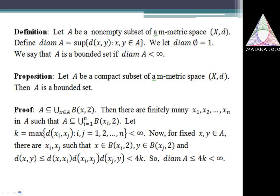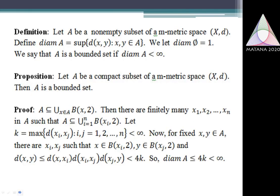I define a new concept in the next slide: the diameter of a subset of an M-Matrix Space. I begin with the M-Matrix Space X and consider a set A. I define the diameter of A, denoted diam(A), as the supremum of D(x, y) where the supremum is taken over all pairs x, y in A. The diameter of the empty set is defined as one. A subset is said to be a bounded set in an M-Matrix Space if the diameter of the set is a finite number. The next proposition is: every compact subset of an M-Matrix Space should be a bounded set.